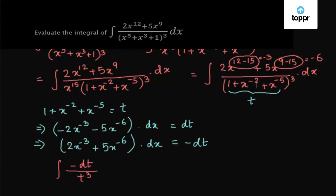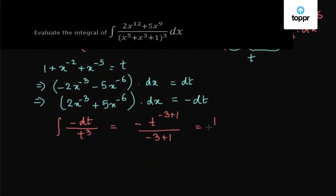What we have done here is we have substituted this complex term by t, and evaluating the integral we get minus t to the power minus 3 plus 1 divided by minus 3 plus 1, which becomes 1 upon 2t squared plus c, where c is the constant of integration.